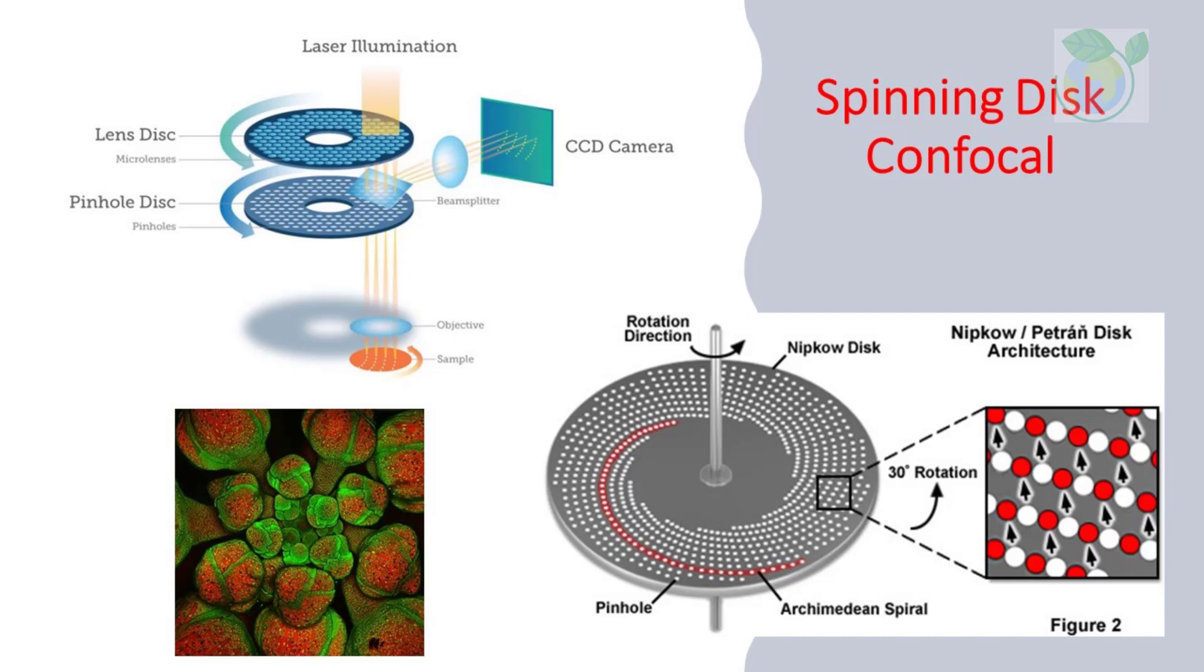Spinning disk, or Nipkow disk, confocal microscopes use a series of moving pinholes on a disk to scan spots of light. Since a series of pinholes scan an area in parallel, each pinhole is allowed to hover over a specific area for a longer amount of time, thereby reducing the excitation energy needed to illuminate a sample when compared to laser scanning microscopes. Decreased excitation energy reduces phototoxicity and photobleaching of a sample, often making it the preferred system for imaging live cells or organisms.